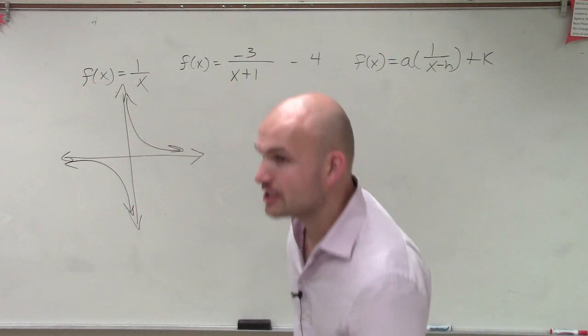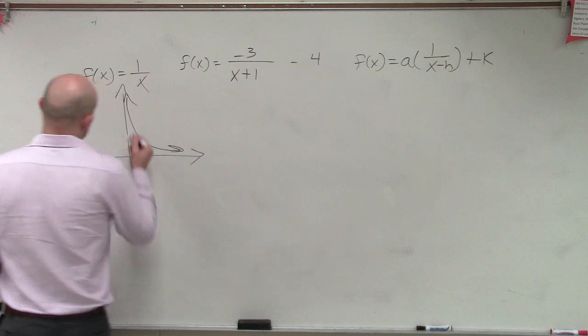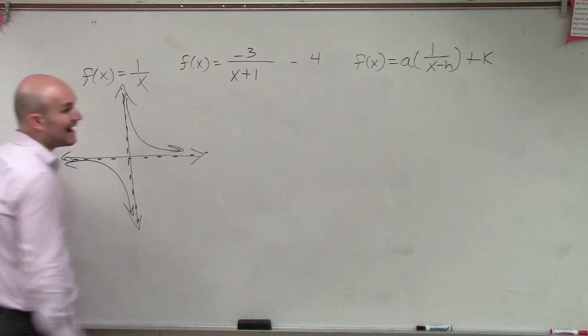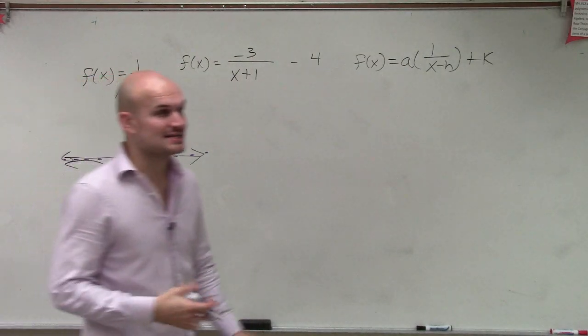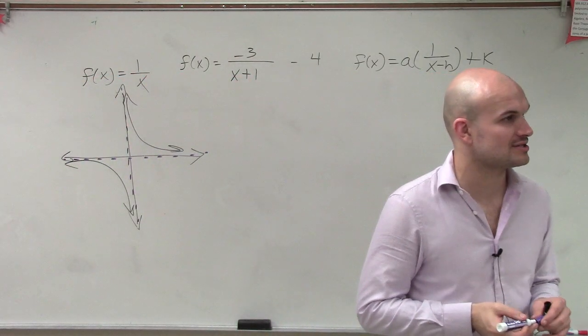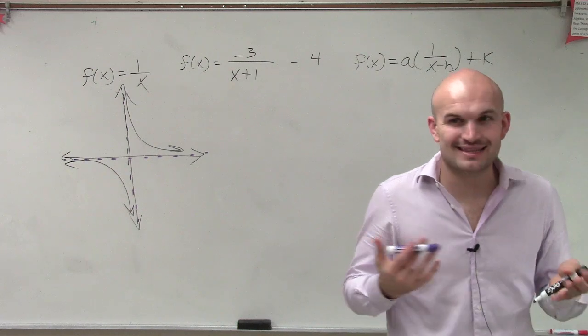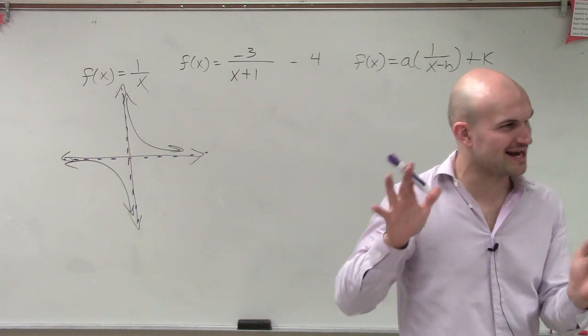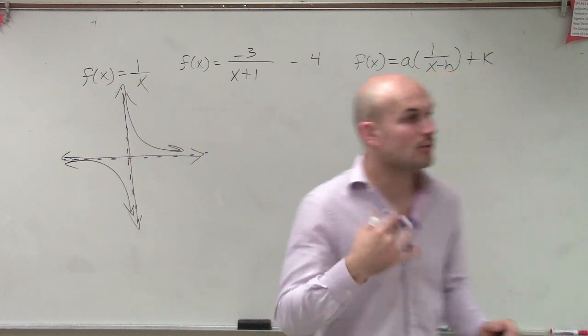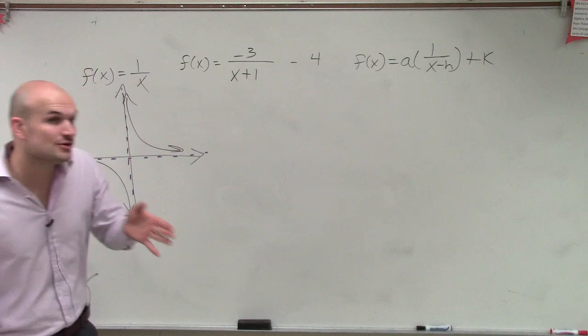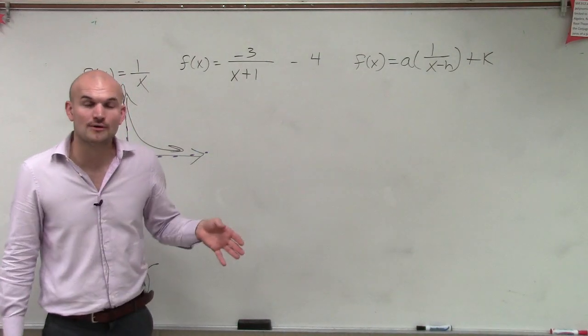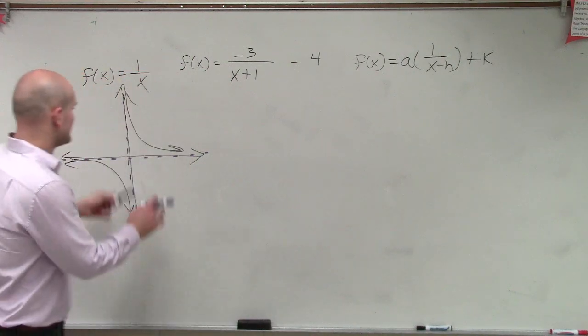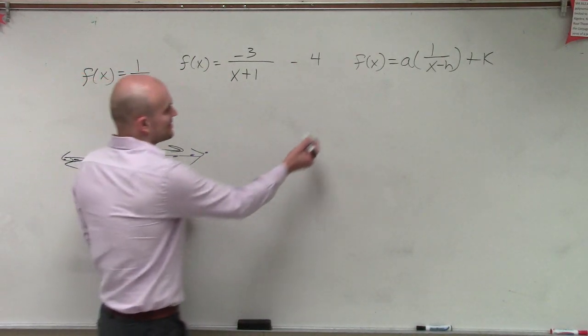But remember, this parent graph has asymptotes, where the graph approaches. Now, I like using the asymptotes to help me with my transformations. The reason being is this hyperbola, as we call it, is kind of difficult to shift around. But what we do know about the hyperbola, which is cool, is that the hyperbola approaches its asymptotes. So if I look at this graph, ladies and gentlemen, and I look at my transformations.